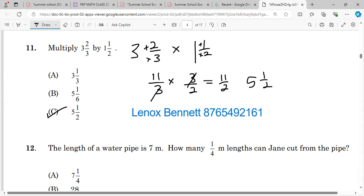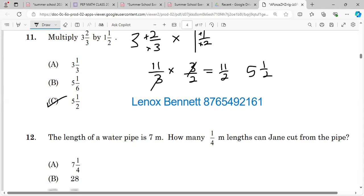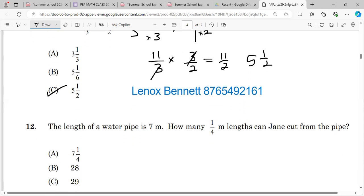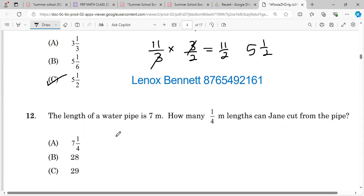Let's move on to 12. It says the length of a water pipe is 7 meters. How many quarter meter lengths can Jane cut from the pipe? Think about it practically. If it's one, you can get four out of one, right? So one is equal to four because you have four quarters in one. So it will be 7 multiplied by 4, which is 28.